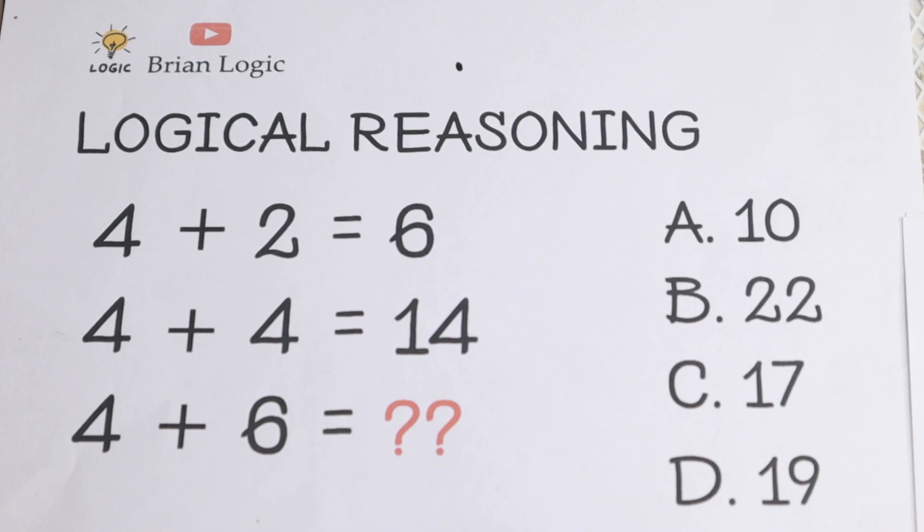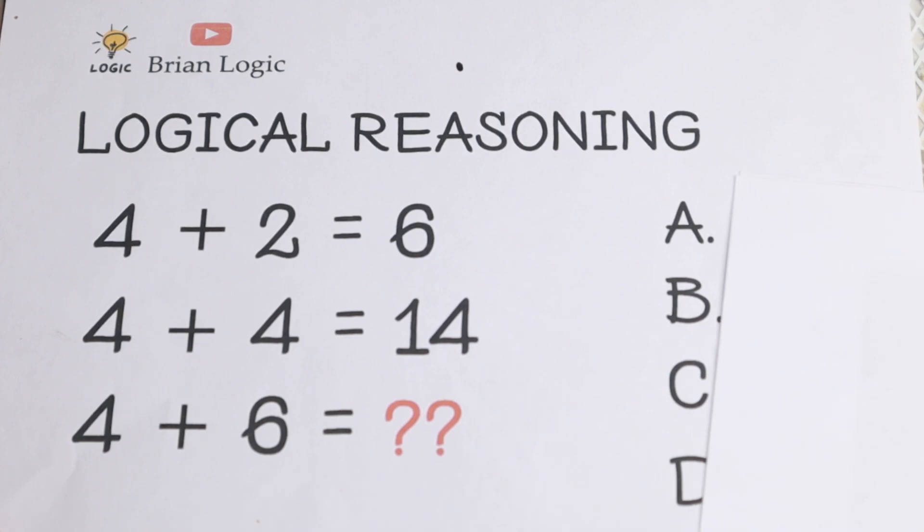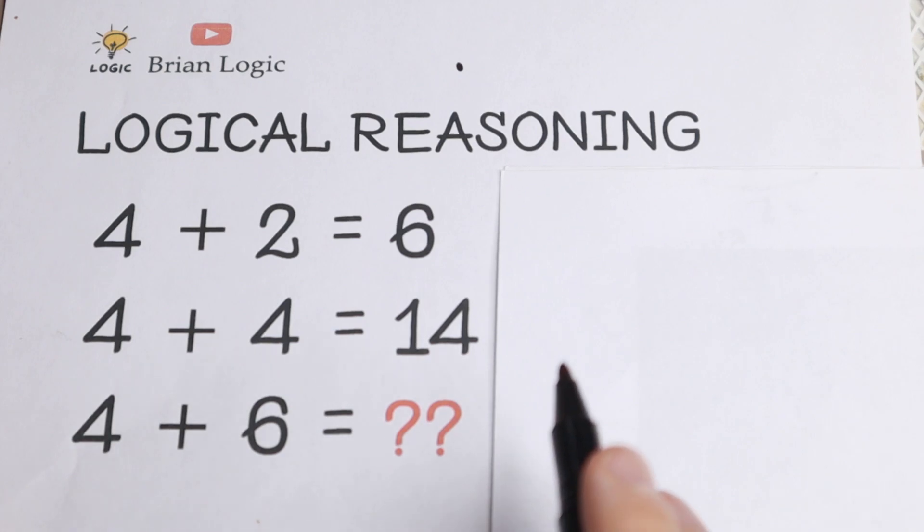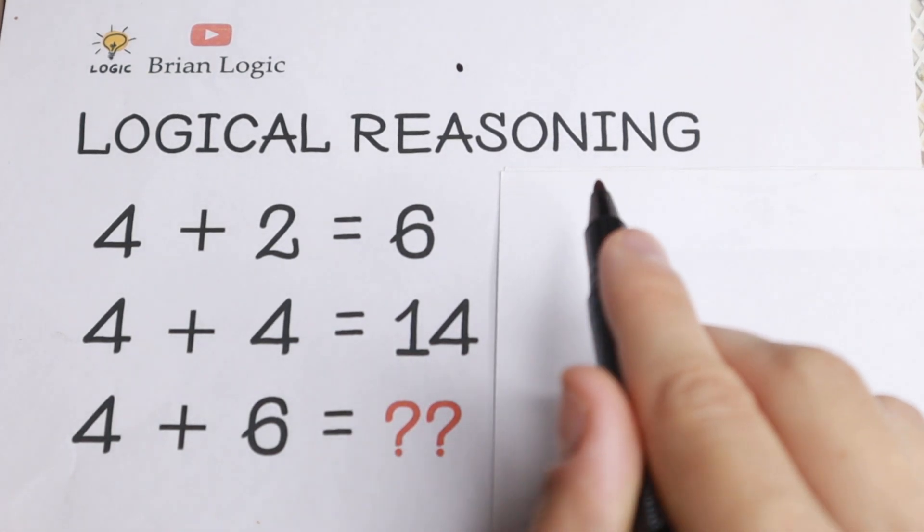Okay, let's try to solve it. We have 4 plus 2 equal to 6, which is absolutely incorrect. We have 4 plus 4 equal to 14, which is absolutely incorrect as well.